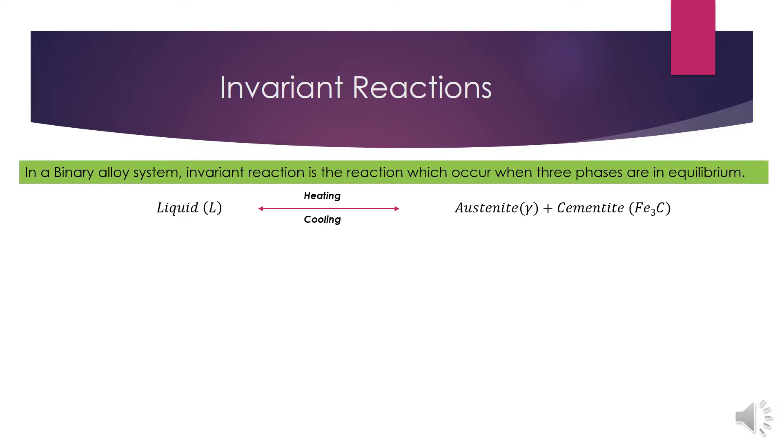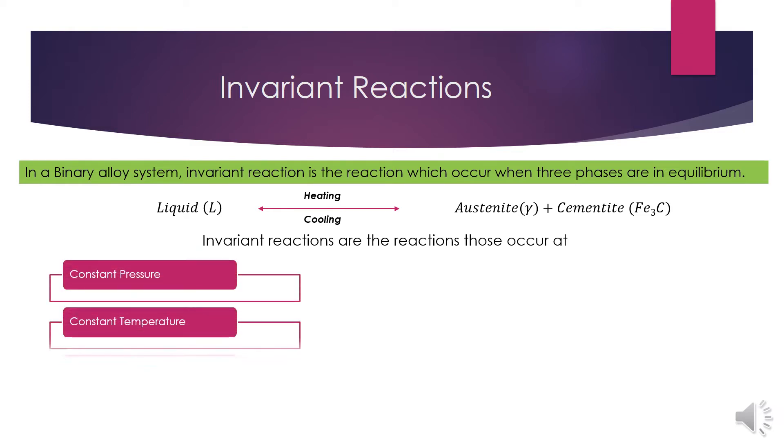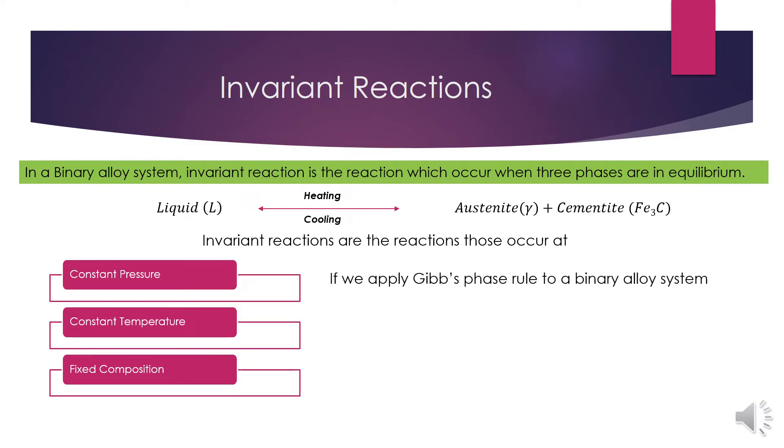One of the properties of invariant reactions is that they occur at constant pressure, constant temperature, and fixed composition. If we apply the Gibbs phase rule to a binary alloy system where we have two components and three phases at constant pressure, then we come to know that the degree of freedom is zero.